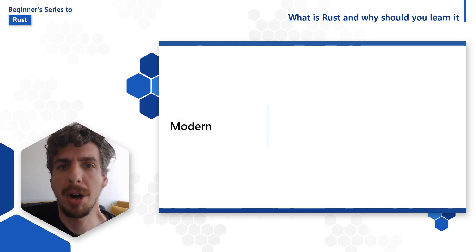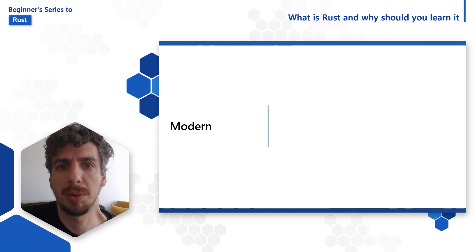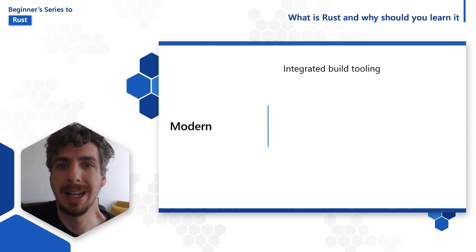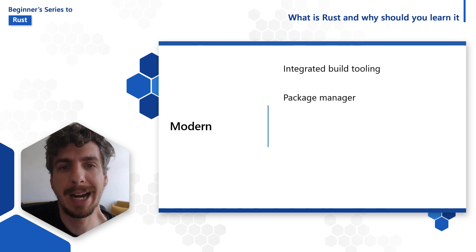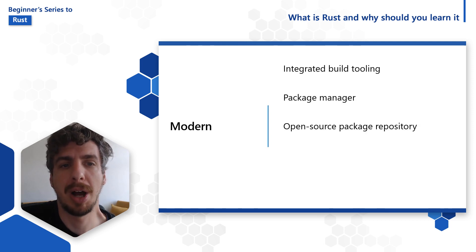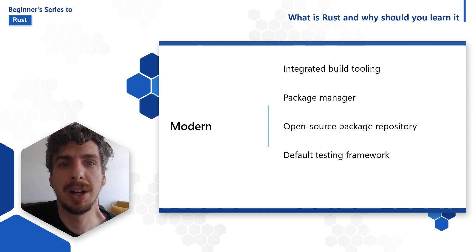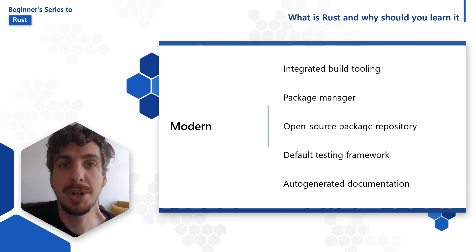Rust is a modern programming language, and so it comes equipped with tools you'd expect from a modern language, like integrated build tooling, a package manager, an open source repository of packages, a default testing framework, auto-generated documentation, and more.